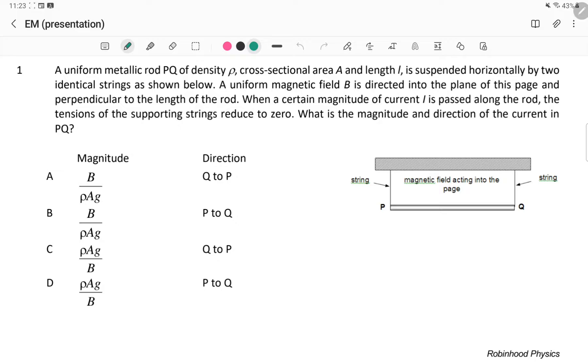So we have a B field directed into the page, and we want to find what is the magnitude of the current when the tension reduces to zero.